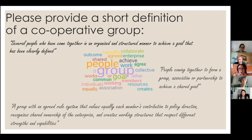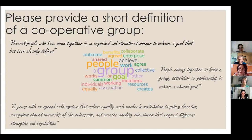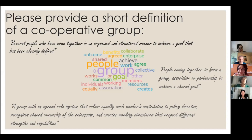We then asked people to give a short definition of a cooperative group. Key words that emerged included 'achieve,' 'work,' 'equally,' 'creates,' 'members,' 'resources.' Verbatims included: 'several people who come together in an organized and structured manner to achieve a clearly defined goal'; 'people coming together to form a group, association, or partnership to achieve a shared goal'; and 'a group with an agreed rule system that values equally each member's contribution to policy direction, recognizes shared ownership, and creates working structures that respect different strengths and capabilities.'